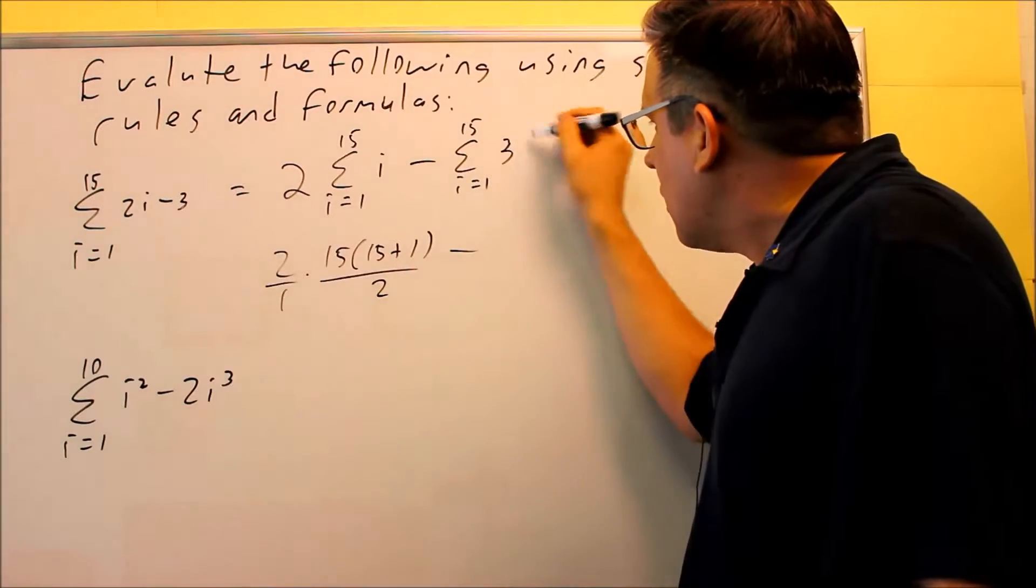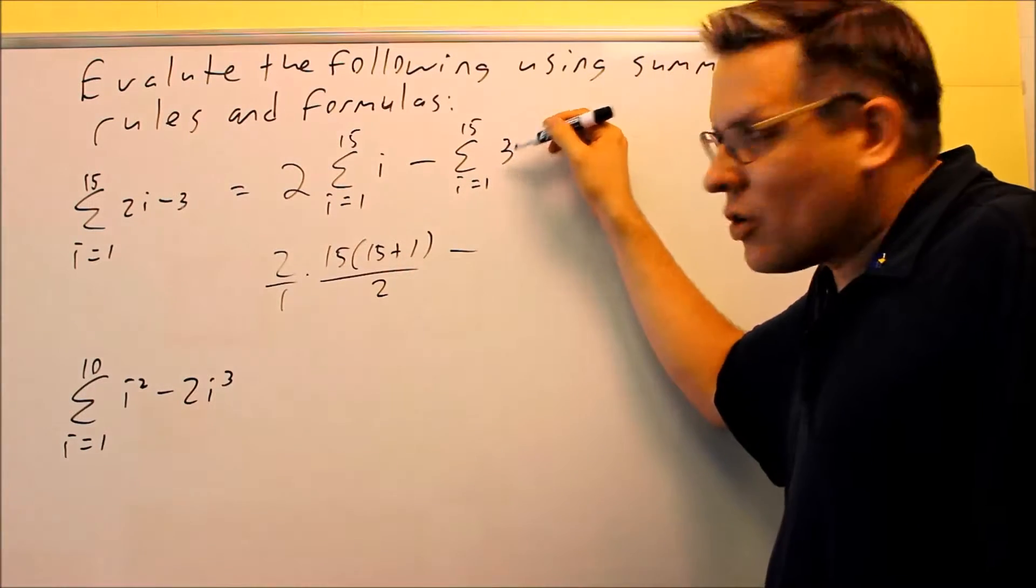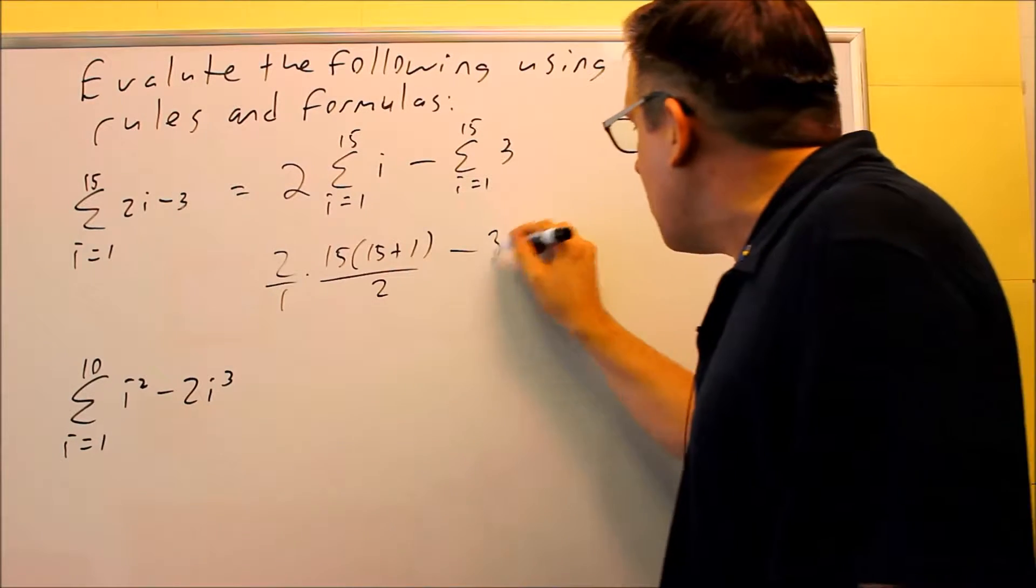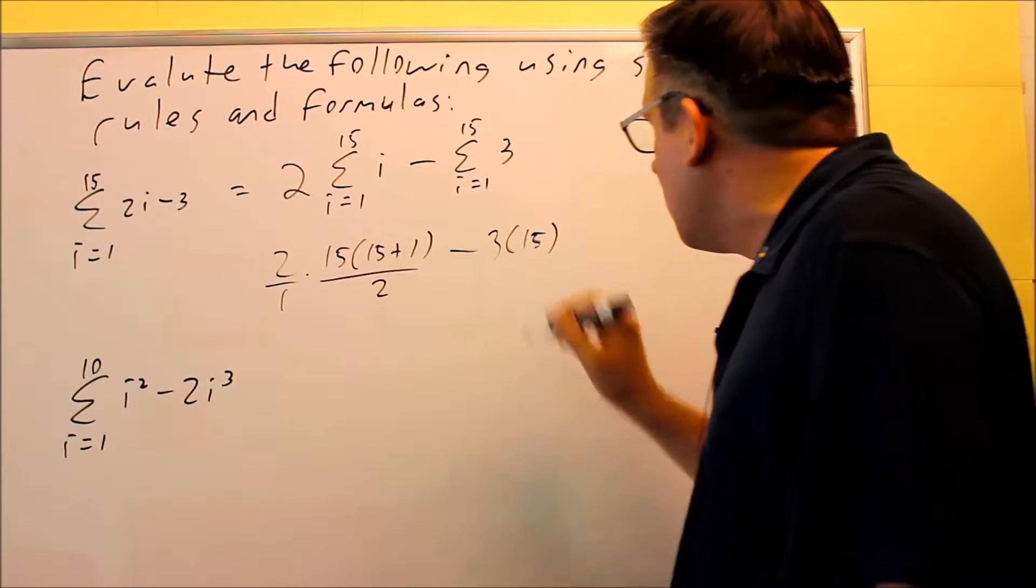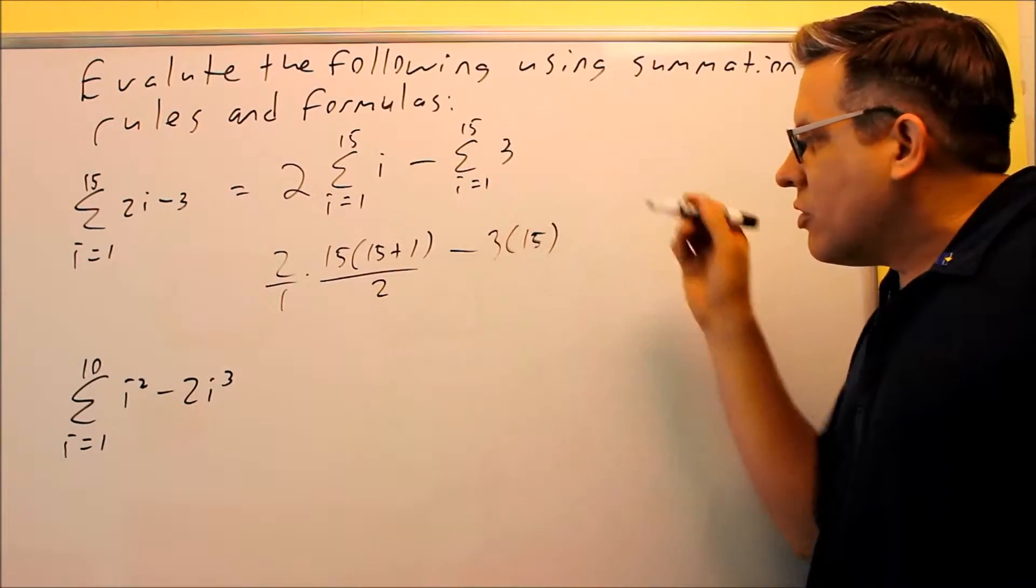So now all I have to do is just work all this out. The 2's are going to cancel out here. If I do 15 times 16, work that out, I get 240 minus 45.